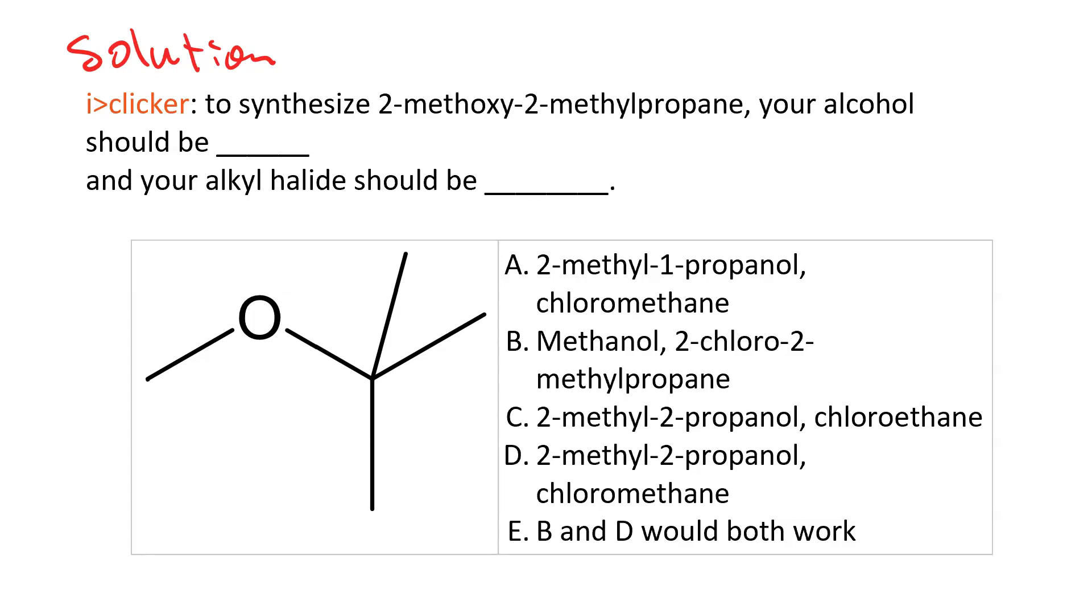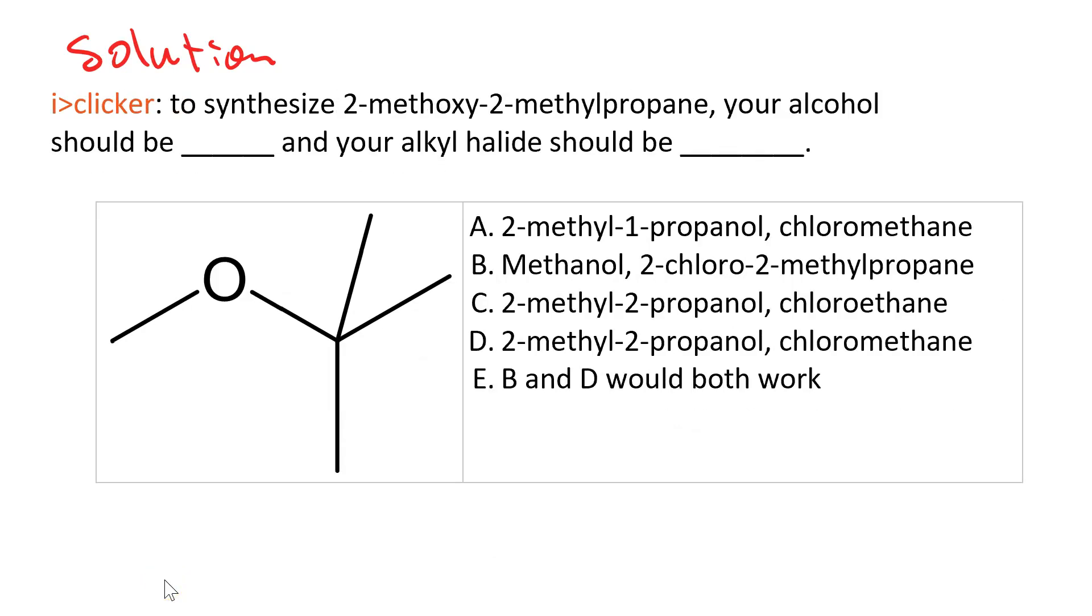Here's my solution. If you haven't figured it out yet, pause it. So the more substituted half, that comes from the alcohol. And the less substituted half comes from the alkyl halide. So we're going to use a methyl halide. And our alcohol should be t-butanol. Systematic name, 2-methyl-2-propanol. Nope, C is wrong, because it has the wrong alkyl halide. We need D.